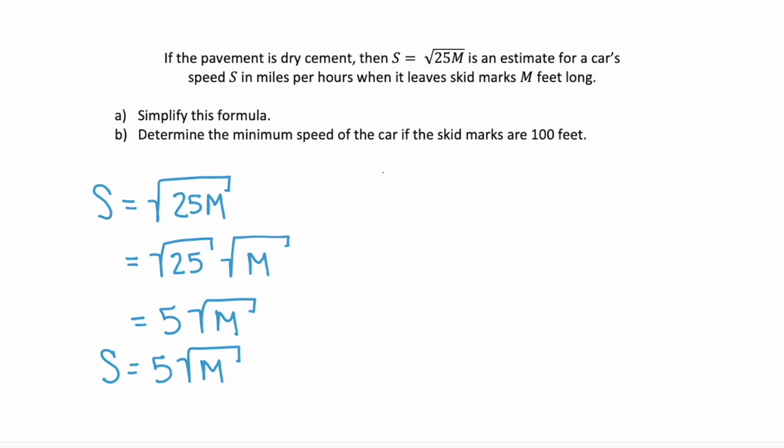Okay, now part B. Part B says determine the minimum speed of the car if the skid marks are 100 feet.